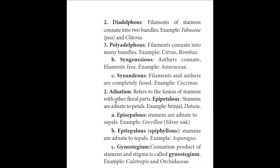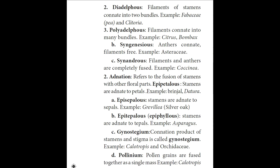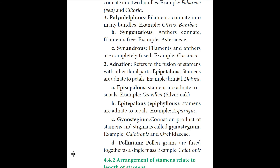Adnation refers to the fusion of stamens with other floral parts. It is classified into: Episepalous — stamens adnate to sepals, example: Grevillea (Silver Oak); Epitepalous — stamens adnate to tepals, example: Asparagus; Gynostegium — stamen and stigma joined together, example: Calotropis and Orchidaceae; Pollenium — pollen grains fused into a single mass, example: Calotropis.